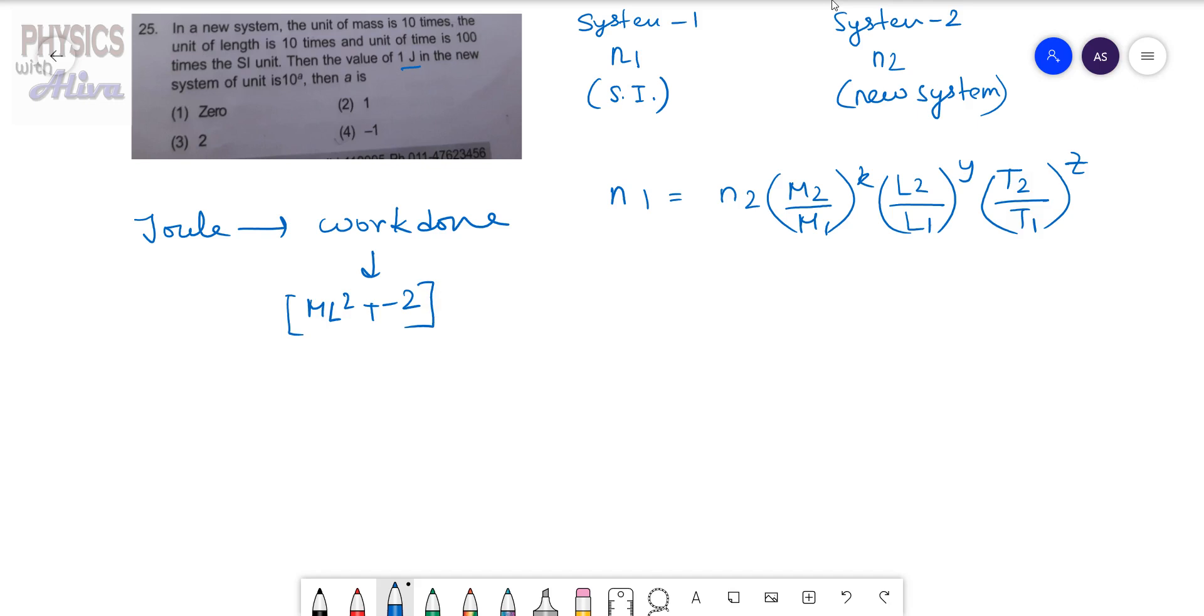So here M to the power 1 is present, that means we can write in place of x, 1. L to the power 2, so we can write that y equals 2. T to the power z, here T to the power minus 2, so z equals minus 2.